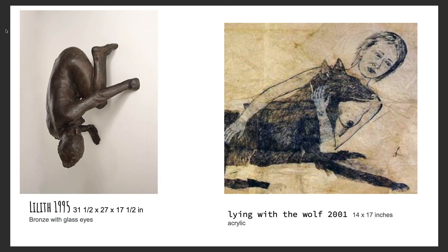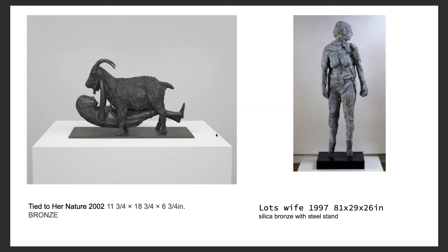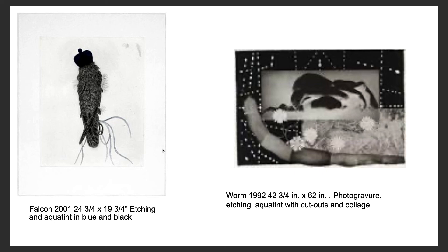'Lying with the Wolf,' 2001 — acrylic paint. Another bronze sculpture: 'Rapture,' 2001, bronze. 'Born,' 2002 — lithograph — interesting relationship between the deer and the person. 'Tied to Her Nature,' 2002 — another interesting one. 'Lot's Wife,' 1997 — silica bronze with steel sand. 'Falcon' — etching and aquatint in blue and black. 'Worm,' 1992 — photogravure, etching, aquatint, and cut-up.